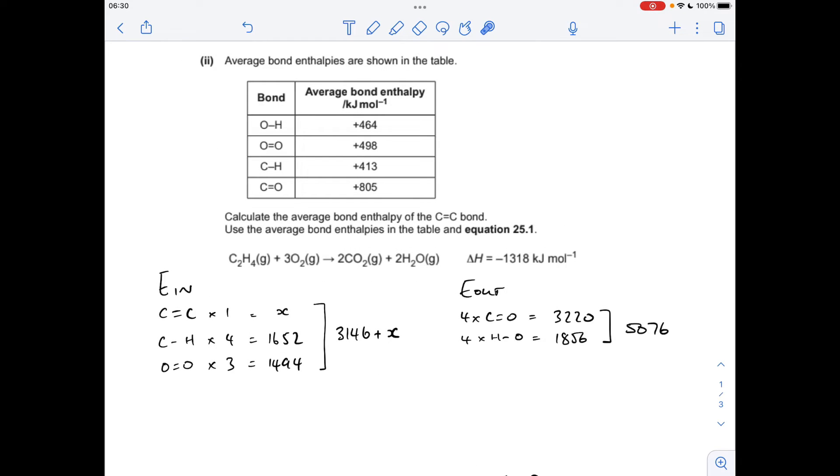For the next part we've got to work out the average bond enthalpy for the C=C double bond, which is within that ethene molecule there. So I call this an in minus out method - we work out the energy that has to go in to break all the bonds in the reactants, we work out the energy released, the energy out, when we make the bonds in the products. And then the delta H, which we've been given, is equal to the in minus the out.